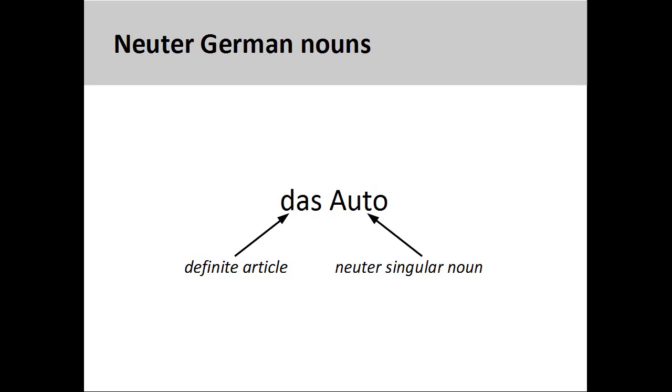The German noun 'Auto,' meaning car, has a neuter grammatical gender, so its definite article is 'das.'